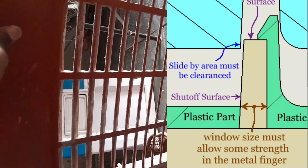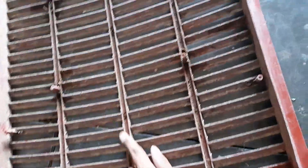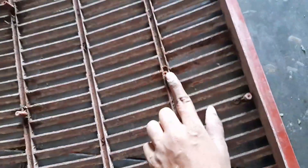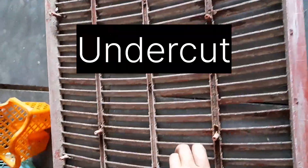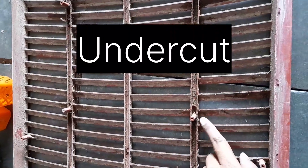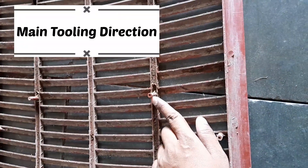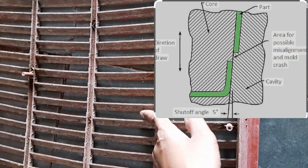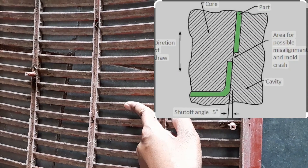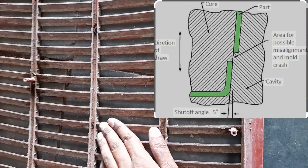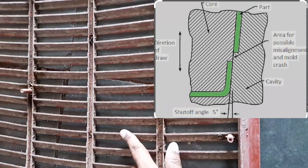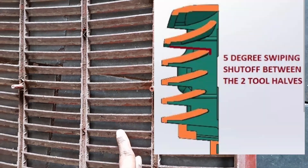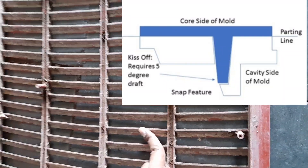This undercut is cleared with the main tooling direction without a lifter or slider. This is the boss on this flap or fin, and this boss is in the main tooling direction. This is the undercut — how it's cleared with this boss. By maintaining the 7 degree at these positions, the undercut has a gap with 7 degree, so there will be steel-to-steel butting of the core and cavity. Here is the parting line from the top side, the core side, and the cavity side, so the fins get cleared with the main tooling direction.